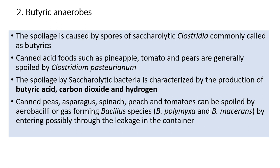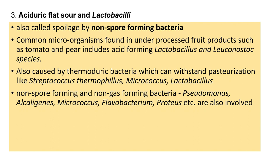Aciduric flat sour and lactobacilli spoilage is also called spoilage by non-spore-forming bacteria. Common microorganisms are found in under-processed fruit products such as tomato and pear, which can withstand pasteurization, like Streptococcus thermophilus and Lactobacillus. Also caused by thermoduric bacteria and non-spore-forming, non-gas-forming bacteria such as Pseudomonas, Alcaligenes, Micrococcus, Flavobacterium, and Proteus.